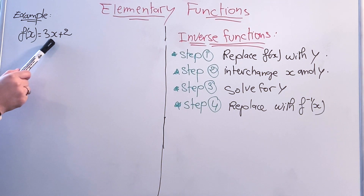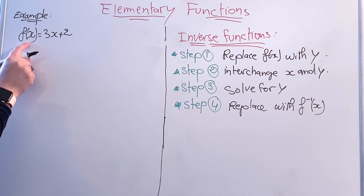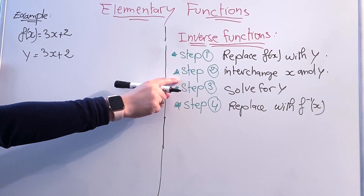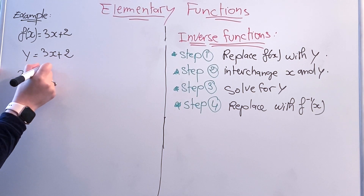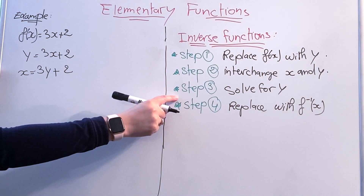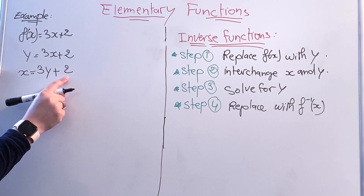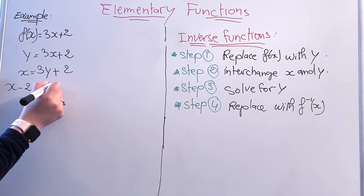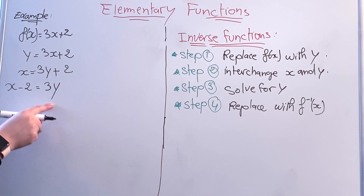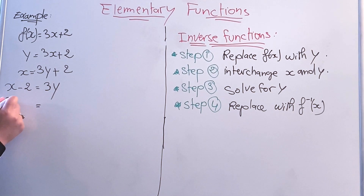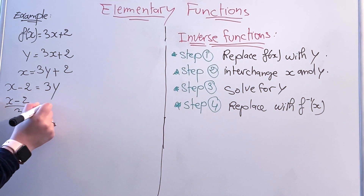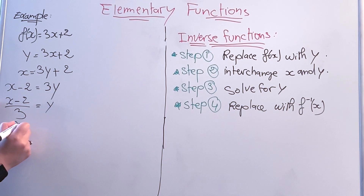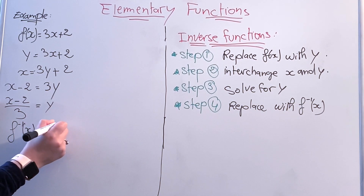Let's find the inverse function of f(x) equals 3x plus 2. First step: replace f(x) with y, so y equals 3x plus 2. Second step: interchange x and y, giving x equals 3y plus 2. Third step: solve for y by subtracting 2 from both sides: x minus 2 equals 3y, then divide both sides by 3. So y equals x minus 2 over 3. Therefore, f inverse of x equals x minus 2 over 3.